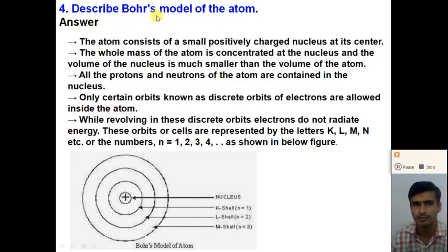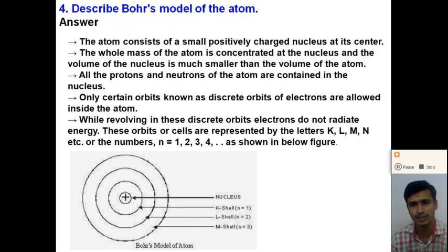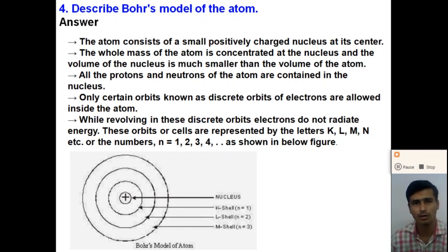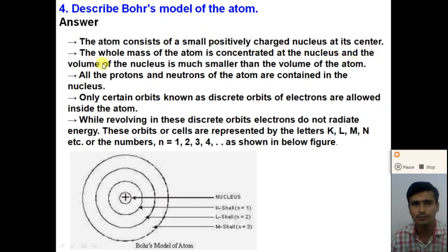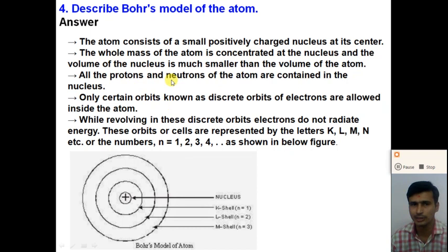Question number 4: Describe Bohr's model of an atom. According to Bohr's model, the atom consists of a small positively charged nucleus at its center. The whole mass of an atom is concentrated at the nucleus, and the volume of the nucleus is much smaller than the volume of the atom. All the protons and neutrons of an atom are contained in the nucleus.